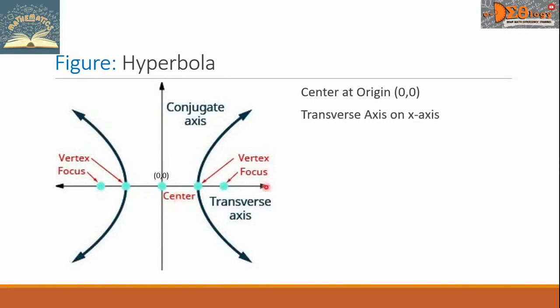The transverse axis is here and it lies on x-axis. This is the conjugate axis. It lies on the y-axis. The foci are here. This is the first focus denoted by F and the second focus denoted by F'. The line segment connecting this foci is assigned to be 2C.